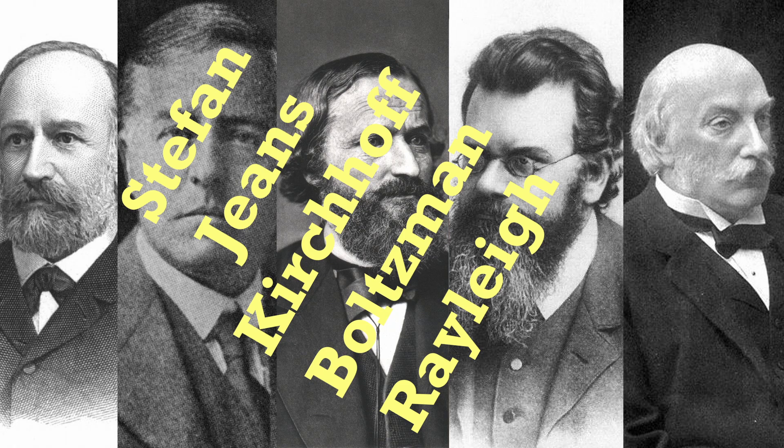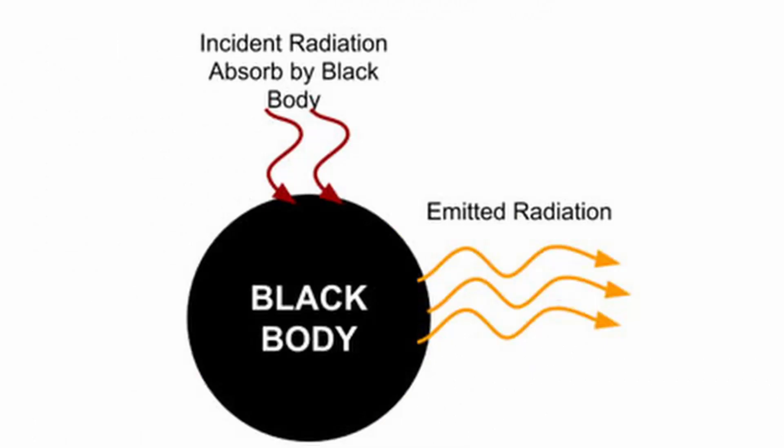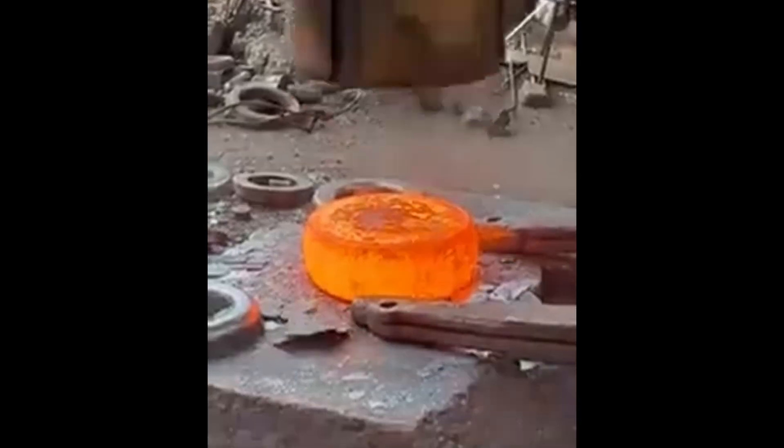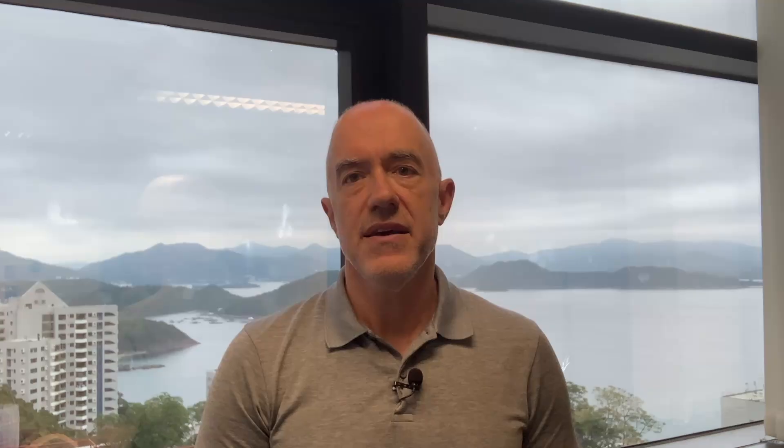But first let's take a moment to review the early history of quantum mechanics. It was the turn of the century and several brilliant physicists were stumped by a physics problem, the problem of black body radiation. What is the relationship between the temperature of a black body and the wavelength of the light that it radiates? We can see that as a piece of iron heats up it starts to glow red. We say that the iron becomes red hot.